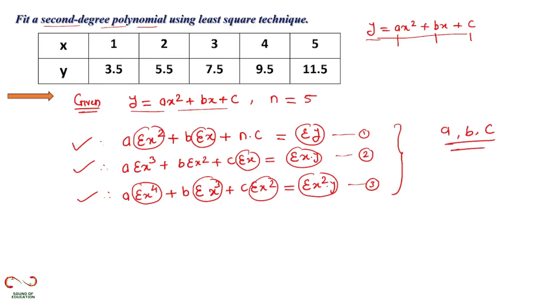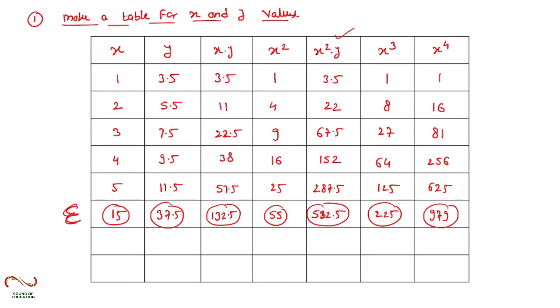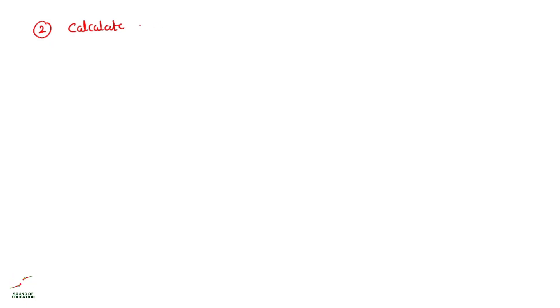Now I have all three equations. I will put values into them to get three new equations, convert those into matrix form, and solve using Gauss elimination to get the values of a, b, and c — similar to what we did for the straight line equation. The next step is to calculate constants a, b, and c using the required equations for second degree polynomial.